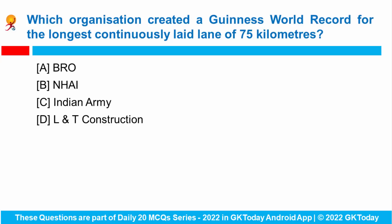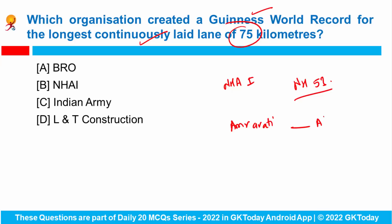Next question: Which organization created a Guinness World Record for the longest continuously-laid lane of 75 km? The National Highways Authority of India created a Guinness World Record by completing construction of 75 km of continuous bituminous concrete in a single lane on NH-53, which runs between Amravati and Akola in the state of Maharashtra.